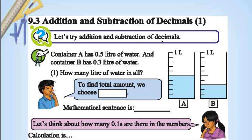Let's try addition and subtraction. Container A has 0.5L of water and container B has 0.3L of water. How many liters of water in all? To find the total amount,